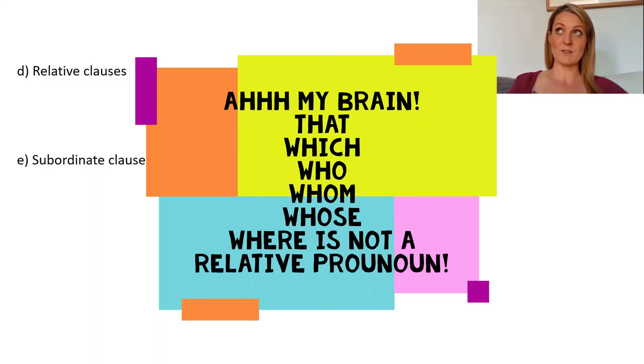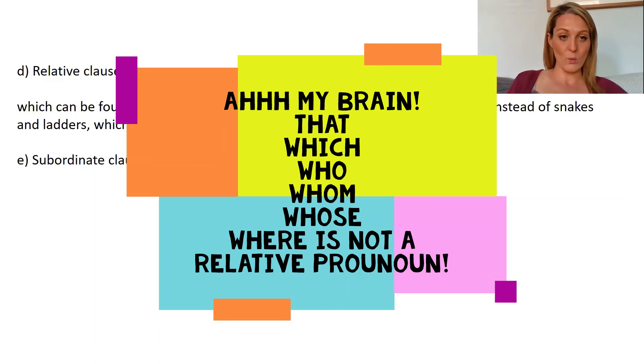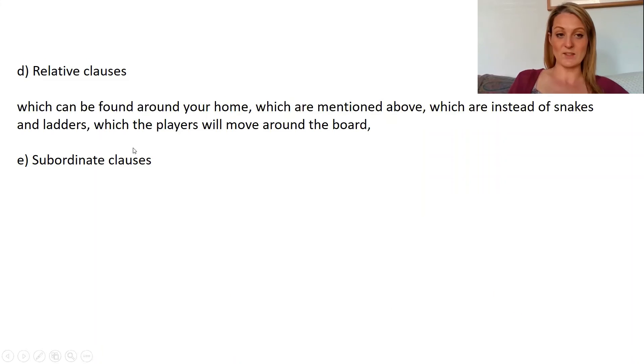Have a think, can you remember all the relative pronouns? Can Miss Joe remember all the relative pronouns? So we've got which, who, that, where. Hopefully you've remembered though because obviously my brain's not quite working as well as yours might be. Let's have a look at them. So we've got which can be found around your house, which are mentioned above, which are instead of snakes and ladders, which players will move around the board. So they're all adding extra information into the middle of your sentences using commas to separate them from the main clause.